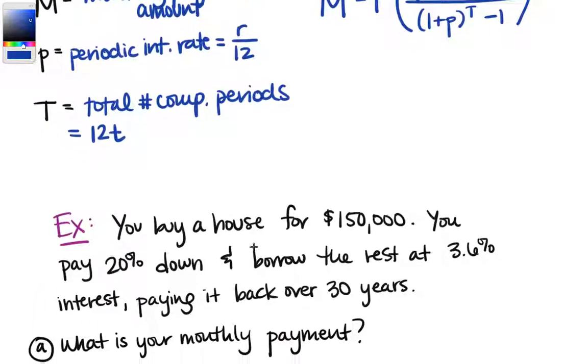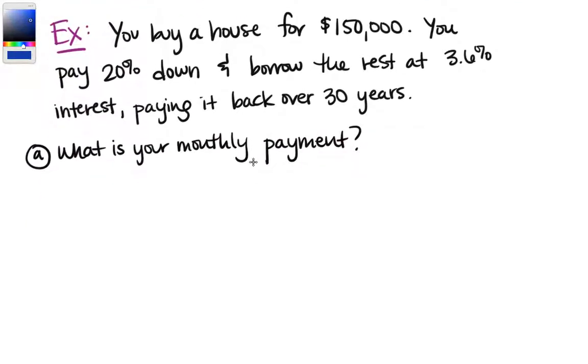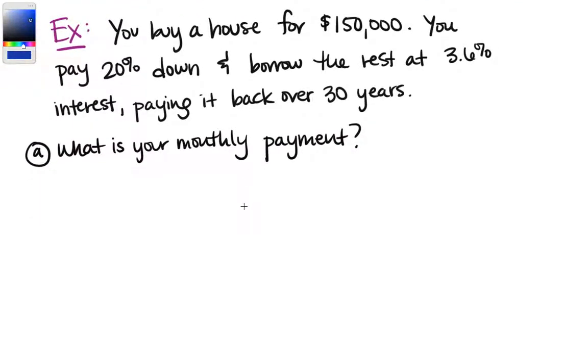Let's go ahead and put this formula into practice with the following example. You buy a house for $150,000. You pay 20% down and borrow the rest at 3.6% interest paying it back over 30 years. So what we're dealing with here is a mortgage which generally is just a fancy word for a loan used to buy a house or a piece of land. We want to figure out our monthly payment.